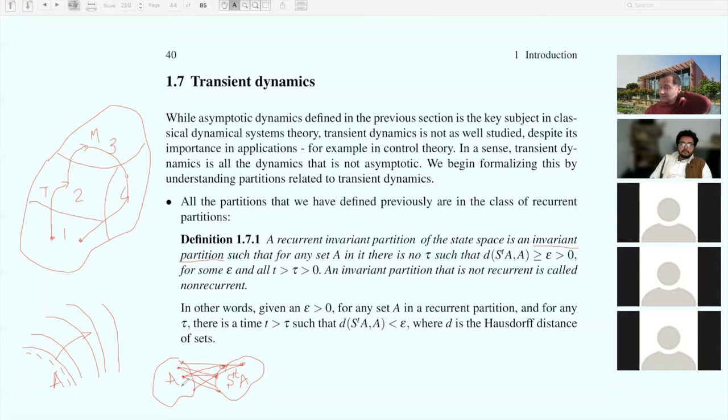Then do the same but starting from set S_T A and measure the distances to A. Take a supremum again. You get two numbers. Take the maximum—that's the worst case scenario overall. That's the distance between two sets, called the Hausdorff distance.